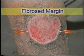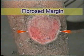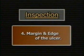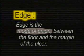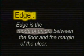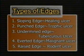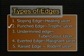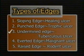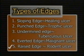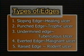A chronic non-healing ulcer shows marked fibrosis with thickened white skin margins without the blue line of growing epithelium. The edge is the mode of union between the floor and the margin of the ulcer, so it has thickness — a third dimension — and it can be both inspected and palpated. There are five types of edges: sloping edge of a healing ulcer, punched edge of a trophic ulcer, undermined edge of a tuberculous ulcer, raised and everted edge of a malignant ulcer, and raised but not everted edge of a rodent ulcer.